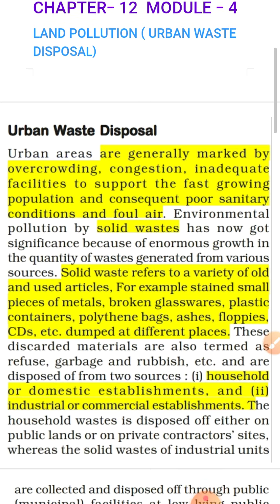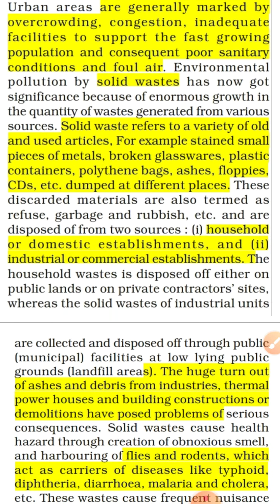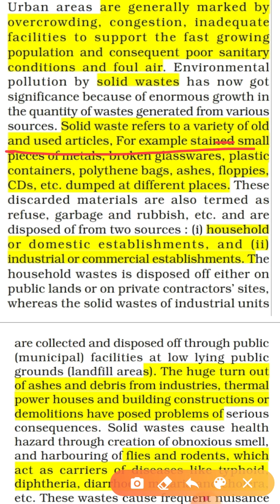Solid waste refers to a variety of old and used articles — for example, stained small pieces of metal, broken glassware, plastic containers, polythene bags, CDs, floppies, ashes, waste paper, and different plastic bags. These are the different kinds of solid waste. Generally there are two sources: first, household waste disposed by domestic establishments, and second, industrial waste from industrial areas.